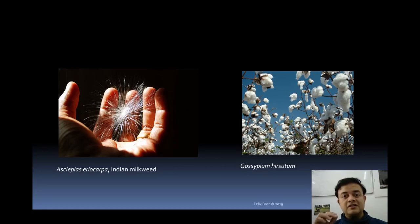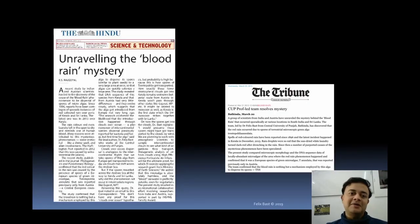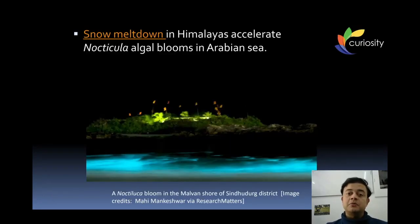The blood rain could also be an adaptation for spore dispersal — the spores of this alga get dispersed into the atmosphere and spread over thousands of hectares through rain, similar to how Indian milkweed or cotton disperses its seeds. This has been reported in the media as 'Unravelling the Blood Rain Mystery.' Algae are also responsible for bioluminescent blooms, such as those reported last year along the Maharashtra coast in Sindhudurg district.